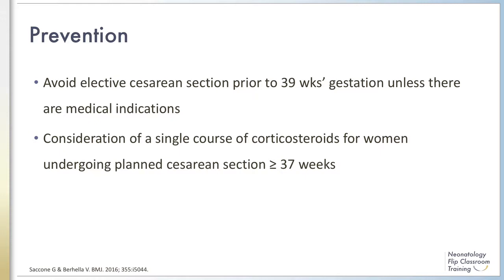A recent systematic review and meta-analysis published in BMJ in 2016 concluded that a single course of corticosteroids should be considered for women undergoing planned cesarean section at 37 or more weeks gestation, as well as women at risk for imminent late preterm delivery at 34 to 36 and 6/7th weeks gestation, to reduce the risk of respiratory distress.